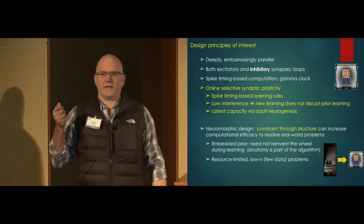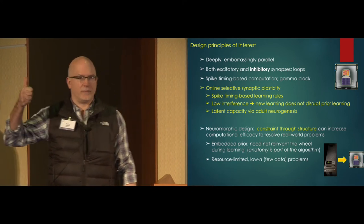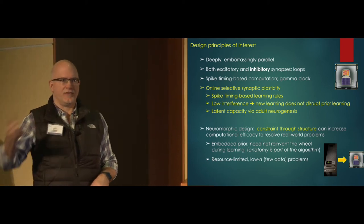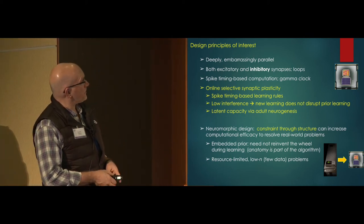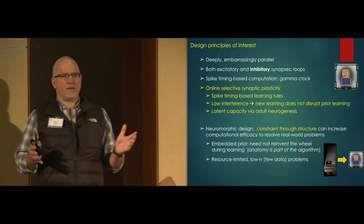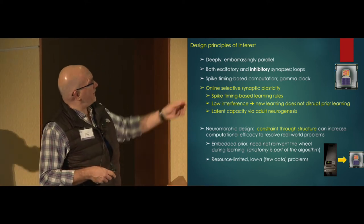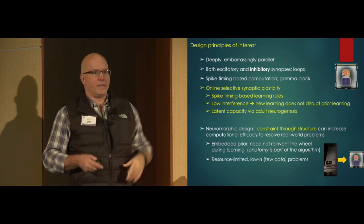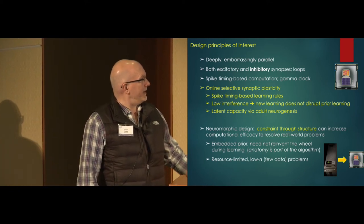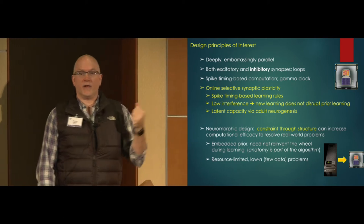This, in part, relies on drawing on some latent capacity, which, in the biological system, the analog is adult neurogenesis, which in the olfactory bulb and the hippocampus are the two places where this is really prominent in the brain. So this has actually cued us to its computational power to sustain lifelong learning in this system. This is another shout-out to something we've all talked about. We think about it as a constraint through structure. We're not trying to do everything. I'm going to steal Terry's phrase that the anatomy is part of the algorithm.